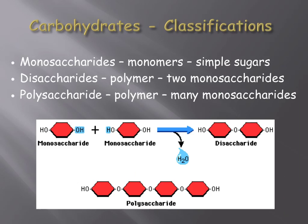An example of a monosaccharide would be glucose — it's a major source of energy for humans. Diabetes is a disease characterized by individuals that cannot regulate their blood sugar levels properly. Lactose is an example of a disaccharide. It's made up of two monosaccharides stuck together, specifically glucose and galactose. Lactose is found commonly in milk products, and individuals that lack the ability to break down this sugar have a disease called lactose intolerance.